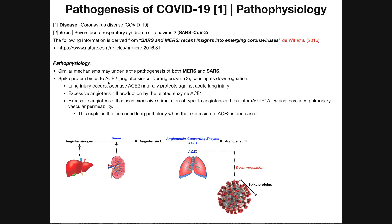ACE2, unlike ACE1 which you're used to hearing about, has a natural protective effect on the lung — it protects the lung against acute injury. Really what it's doing is facilitating the healing process whenever there is acute lung injury. If ACE2 is downregulated, then we're going to have a greater degree of net lung injury.